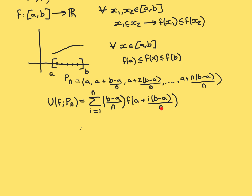Indeed, this formula works for all of them. If you go all the way to the final subinterval, the Nth subinterval, put i equal to N — the N's cancel, the minus a cancels with the a, and you just end up with f(b). That is correct because b is the upper bound for that final subinterval.